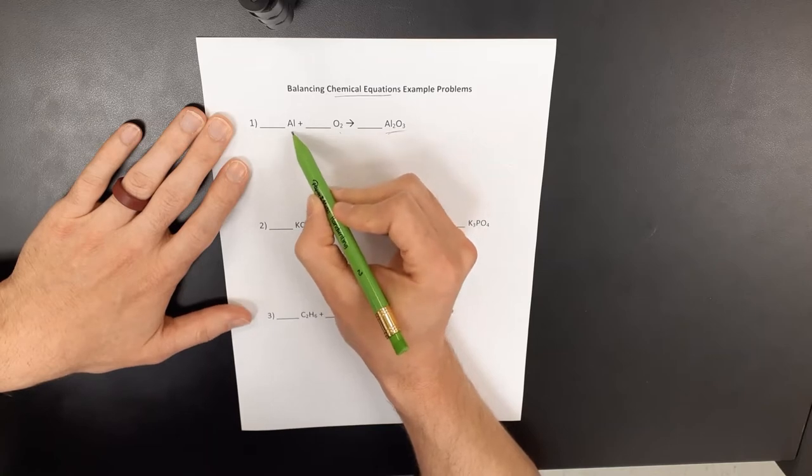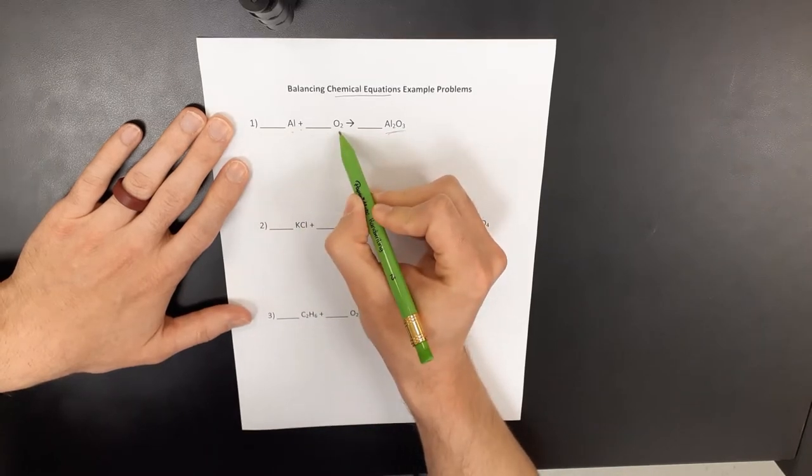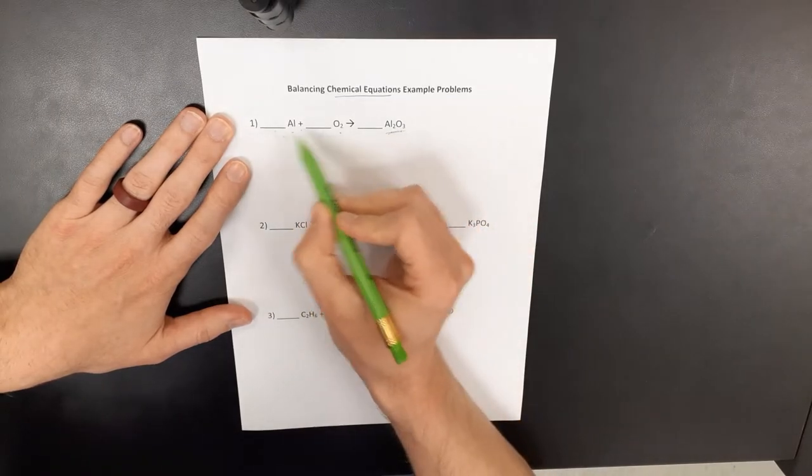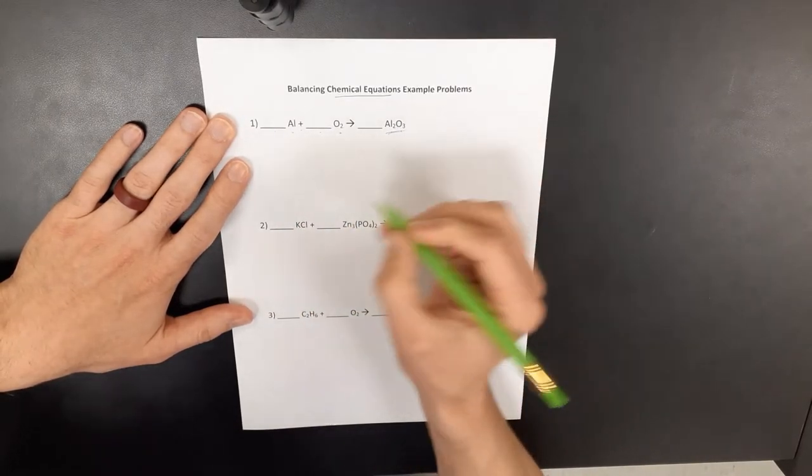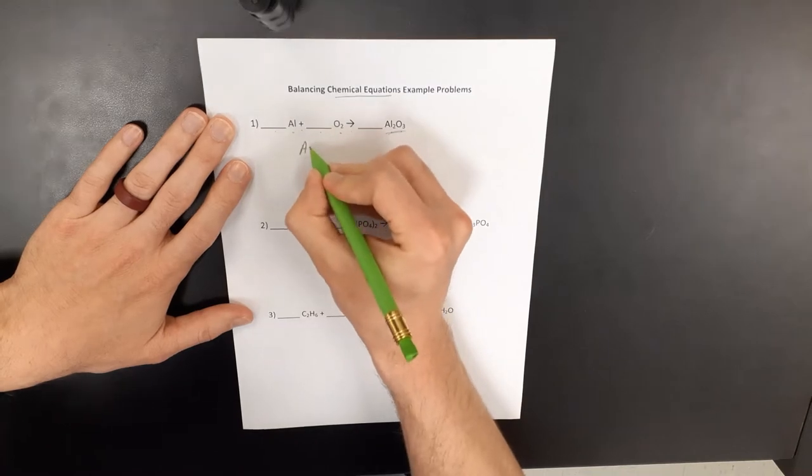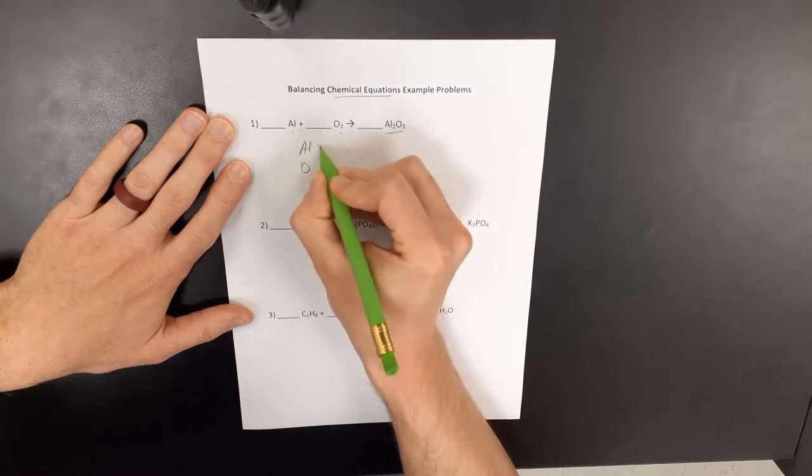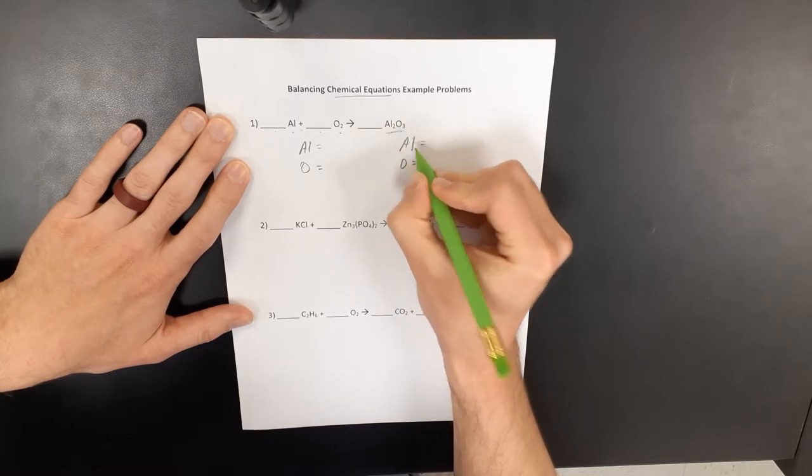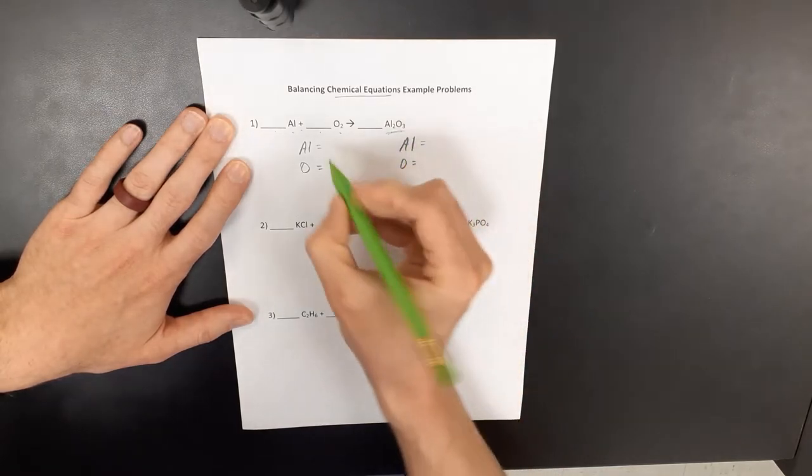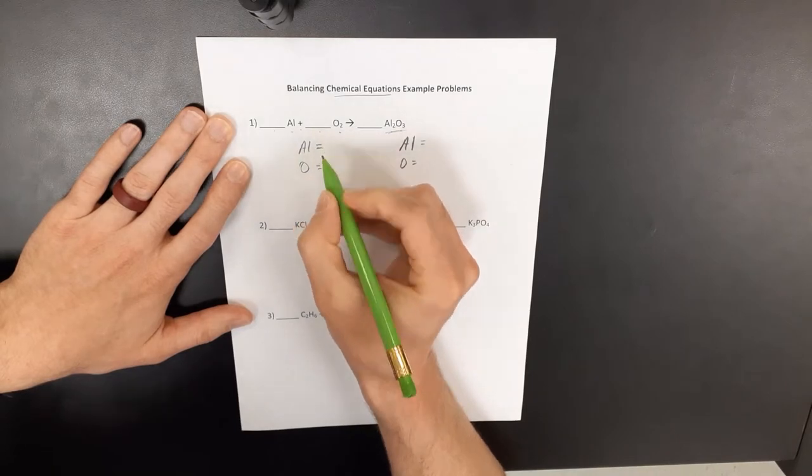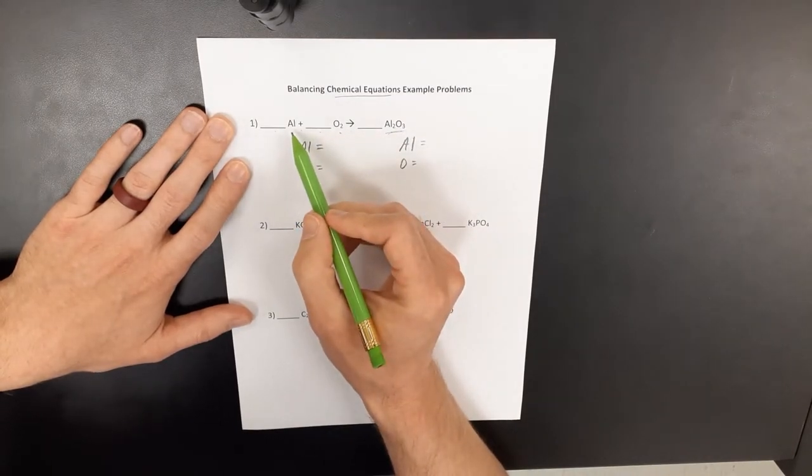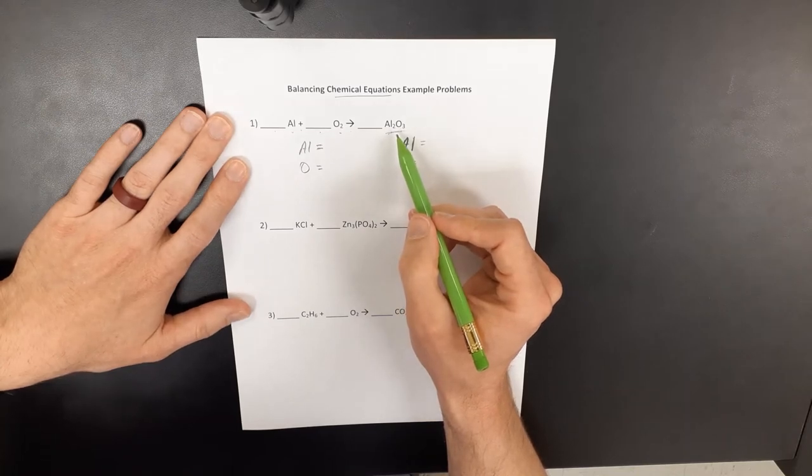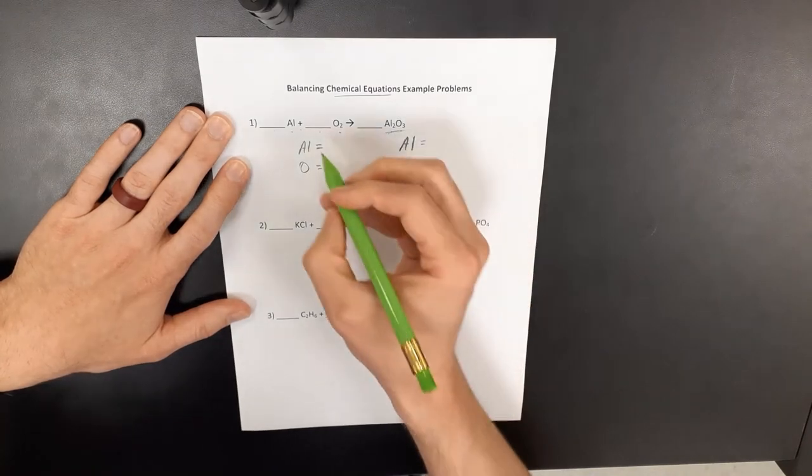So, this first one, this would read as aluminum plus oxygen yields aluminum oxide. But we want to balance these equations. So one technique I like to use for beginners here is just to keep track of your atoms on each side.